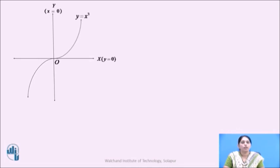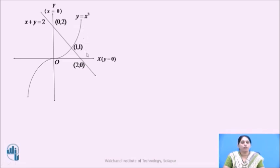Now let us draw the line x plus y equals 2, which intersects the x-axis at the point (2, 0) and the y-axis at the point (0, 2), as we have just seen. The two curves x plus y equals 2 and y equals x cubed intersect at a point, which can be obtained by solving the two equations simultaneously. The region of integration is between the line x plus y equals 2, y equals x cubed, and x equals 0. This region is the region of integration.